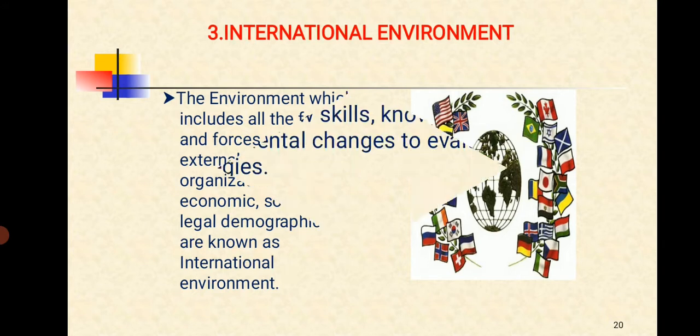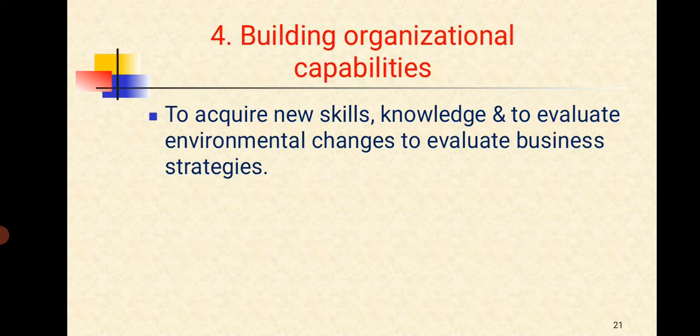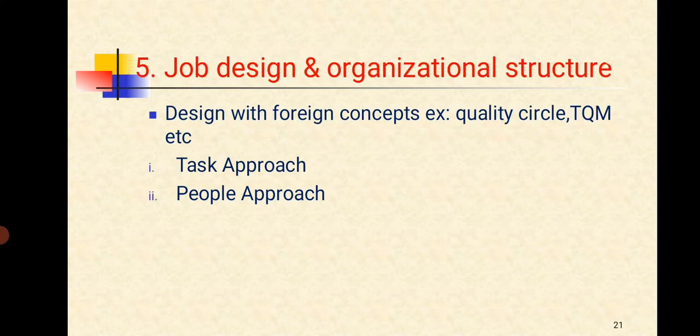And the fourth one is Building Organizational Capabilities to acquire new skills, knowledge and to evaluate environmental changes to evaluate business strategies. And the fifth one is Job Design and Organizational Structure. Design with foreign concept, example quality circle, total quality management. So there's two approaches in job design and organizational structure: task approach and people approach.